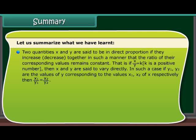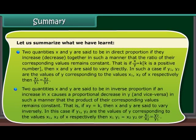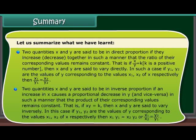In direct proportion, if y1 and y2 are the values of y corresponding to x1 and x2 of x respectively, then x1 upon y1 is equal to x2 upon y2. Two quantities x and y are said to be in inverse proportion if an increase in x causes a proportional decrease in y, and vice versa, such that the product of their corresponding values remains constant. That is, if x times y equals k, then x and y vary inversely. In this case, x1 times y1 is equal to x2 times y2, or x1 upon x2 is equal to y2 upon y1.